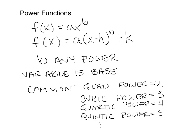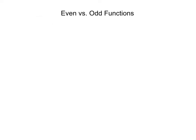One thing to note is that the power can be a fraction, and we'll look at a couple examples of these. There are two main types of power functions: even power functions and odd power functions. Even power functions have even powers — quadratic where the power is 2, quartic, or any where the power is even, meaning divisible by 2: 2, 4, 6, 8, 10, and so on. If it's divisible by 2, it's even.